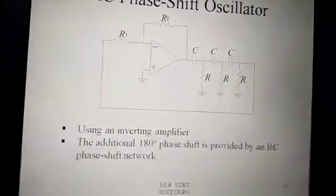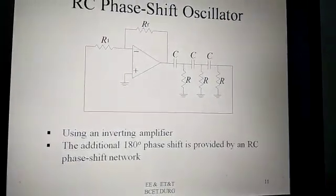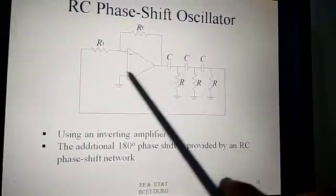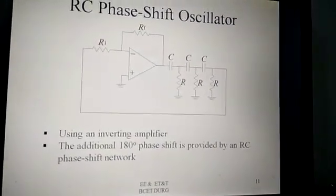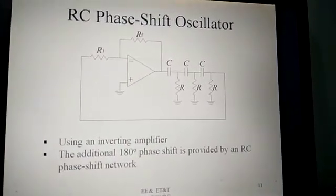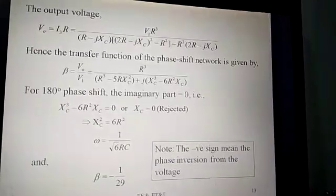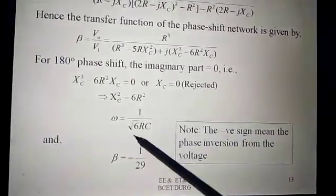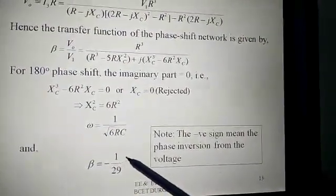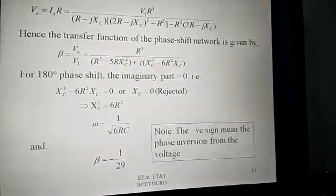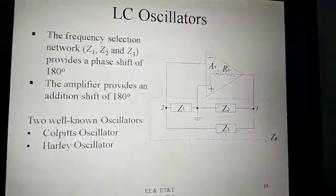This is the RC phase shift oscillator. Three RC networks are present: first RC, second RC, third RC. Each provides 60 degrees of phase shift, giving a total of 180 degrees. The amplifier provides the remaining 180 degrees, completing 360 degrees around the loop, resulting in zero net phase shift — satisfying the Barkhausen criteria. The frequency is given by omega = 1 / (sqrt(6) · RC), and beta = −1/29. These are the criteria obtained from the 3-stage RC phase shift network. In the next topic we will discuss LC oscillators.